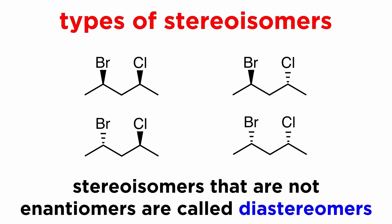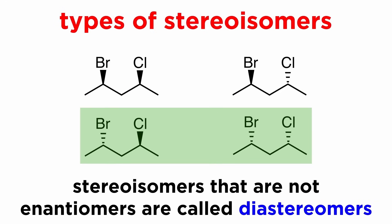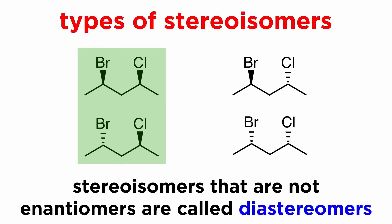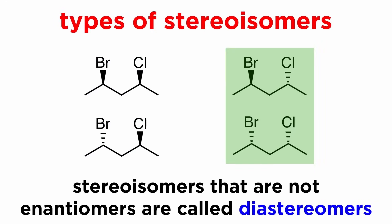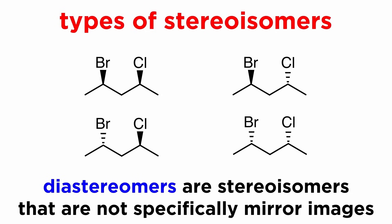But stereoisomers that are not enantiomers have a different relationship — they will be called diastereomers. So these are diastereomers, and so are these, and these, and these. We can say that diastereomers are stereoisomers that are not specifically mirror images of one another.